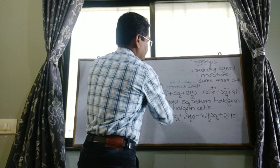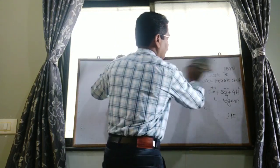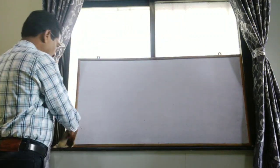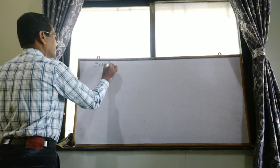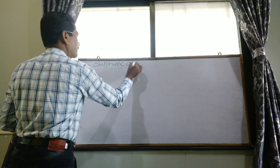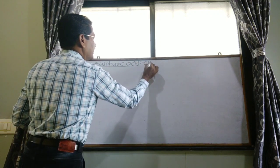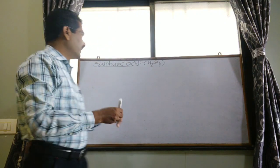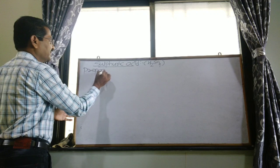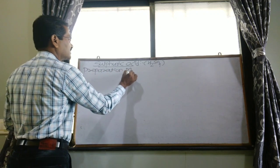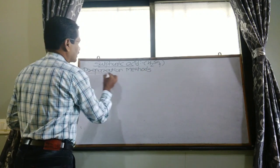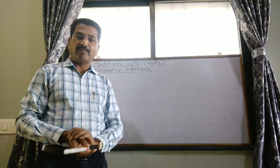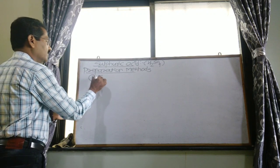Now see the next compound of sulfur — that is sulfuric acid. The next compound is sulfuric acid, having formula H2SO4. First of all, see the preparation method of sulfuric acid. The first preparation method is called the contact method or contact process.